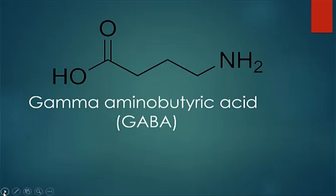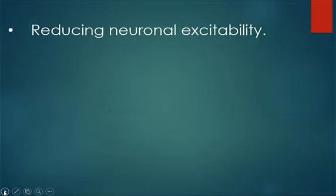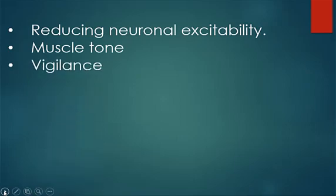Gamma-aminobutyric acid, or GABA, is the main inhibitory neurotransmitter of the central nervous system. It plays an important role in reducing neuronal excitability in the nervous system. It also affects muscle tone, vigilance, circadian rhythms, behavior, learning and memory.